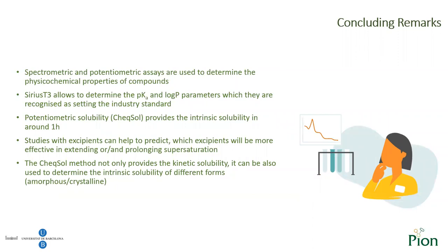To end this webinar, I would like to state some conclusions. Spectrophotometric and potentiometric assays are used to determine the physicochemical properties of compounds. Sirius D3 allows determination of pKa and log P parameters, which are recognized as setting the industrial standard. Potentiometric solubility via the Chexol method provides intrinsic solubility in around one hour. Studies with excipients can help predict which excipient will be most effective in extending or prolonging supersaturation. Finally, the Chexol method not only provides kinetic solubility — it can also be used to determine the intrinsic solubility of different forms, amorphous or crystalline.